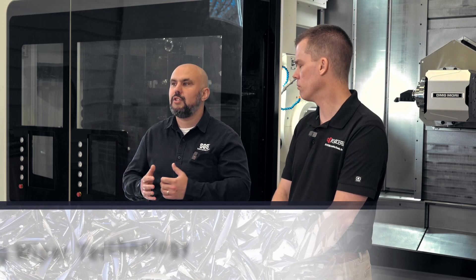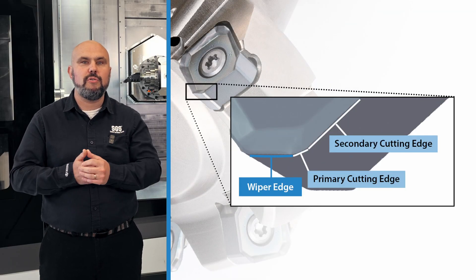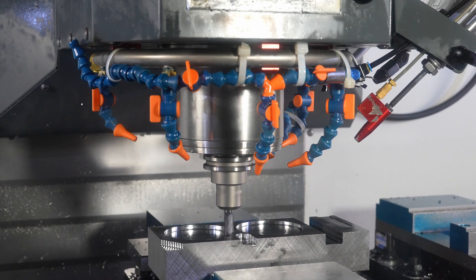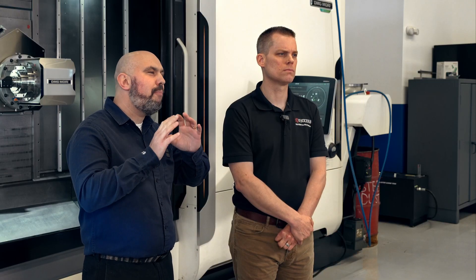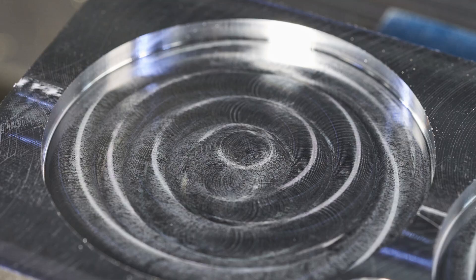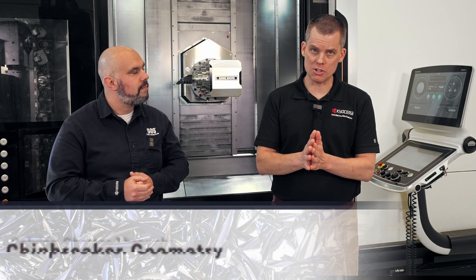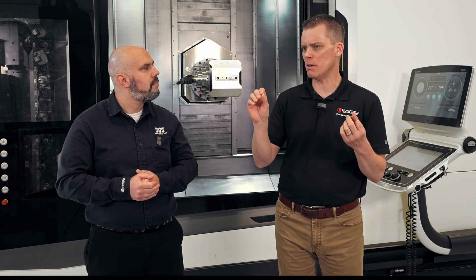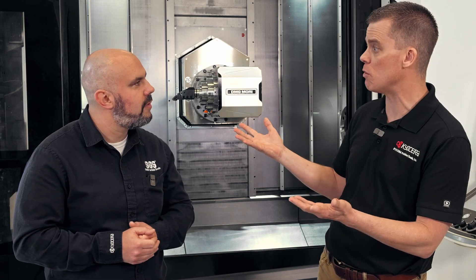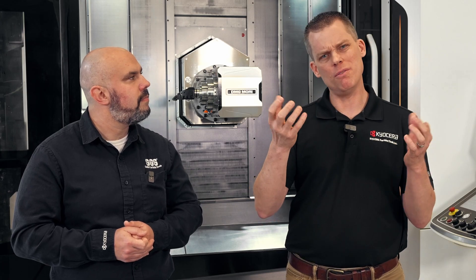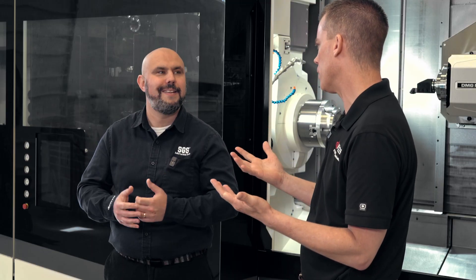Wiper flats, found on both indexable and solid tools, help smooth out chatter through revised tool geometry to improve surface finish — great for refining floor finish, especially when pocketing or slotting. They don't prevent chatter, but they reduce the effect of it, giving a better final part finish. In the indexable world, chip breaker geometry is also important. Positive rake inserts can reduce cutting forces and improve stability, while a tighter radius chip breaker can help control chip flow, though it can also weaken the cutting edge — it's all a balance.